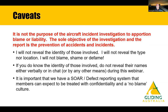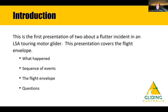There's a whole stack of events and defects that go unreported, and the big shame out of that is we're not going to learn from them and improve things into the future. This is the first presentation in a set of two relating to a flutter incident in a light sports aircraft touring motor glider. This will talk about the flight envelope, what happened, some of the sequence of events, a detailed explanation of the flight envelope, and we'll have a Q&A session afterwards.